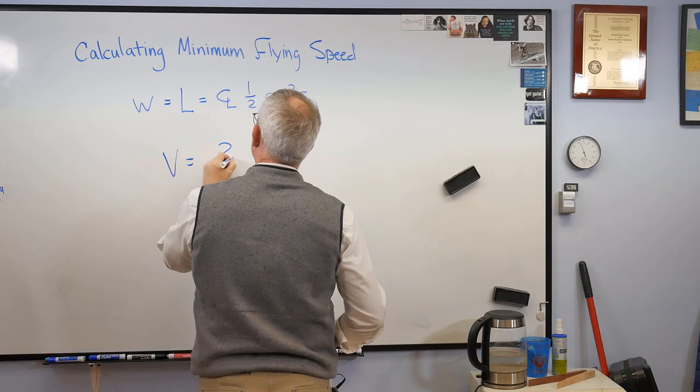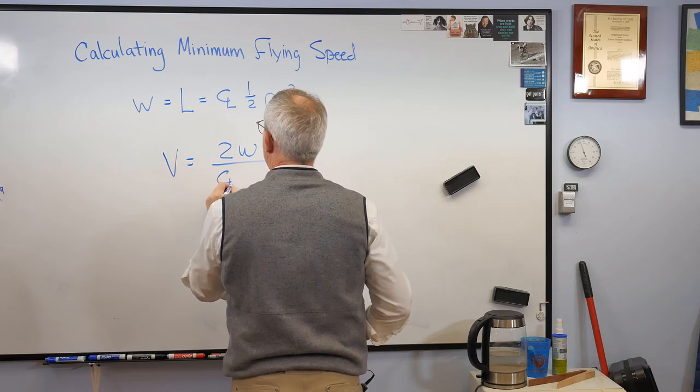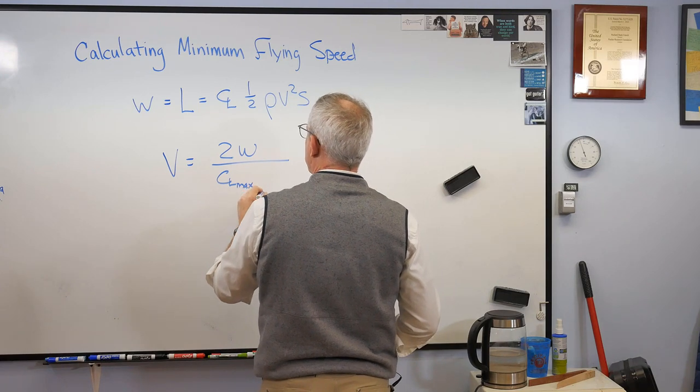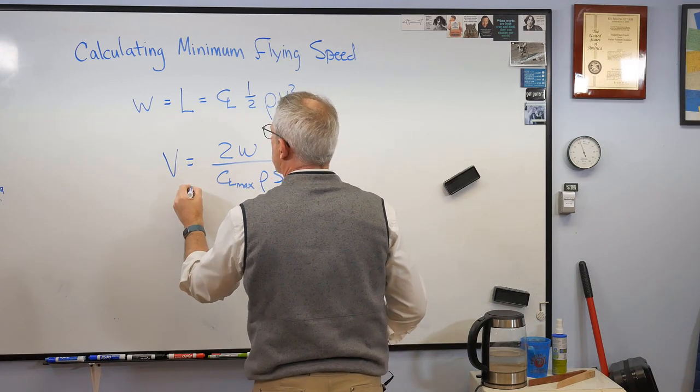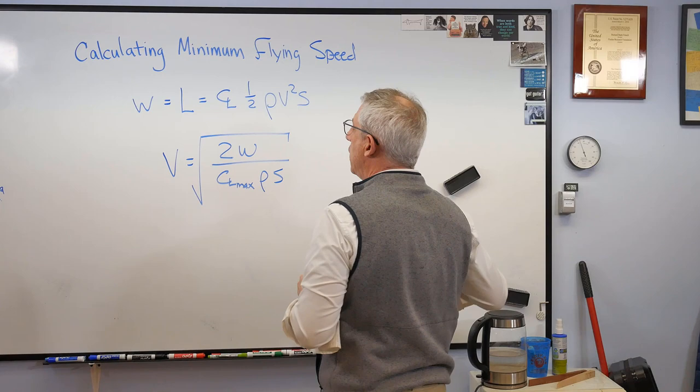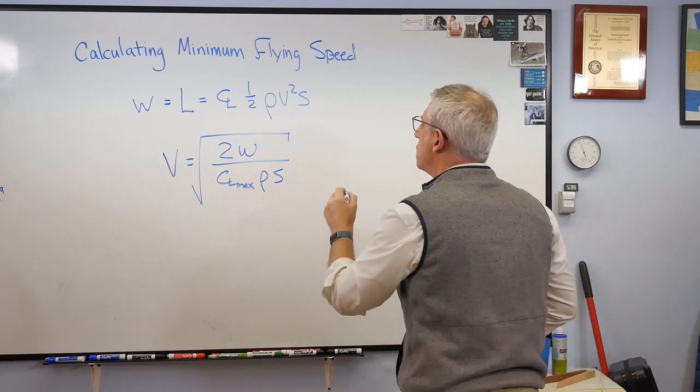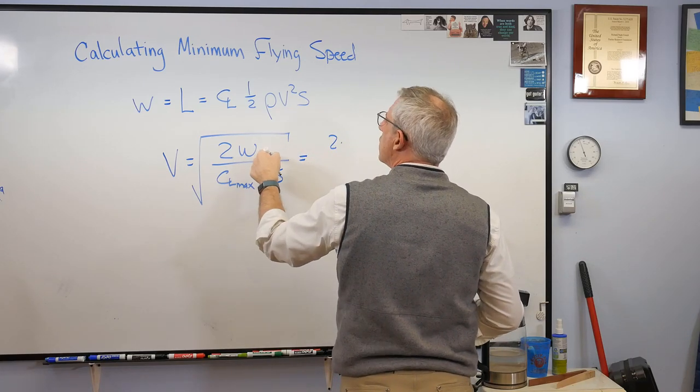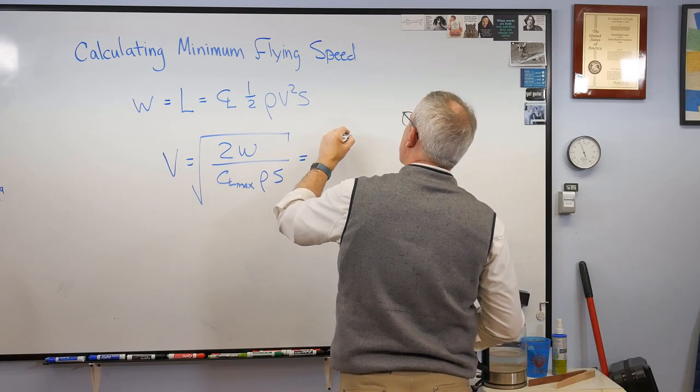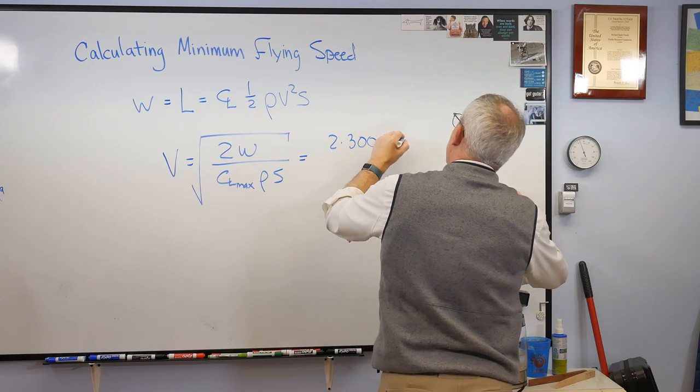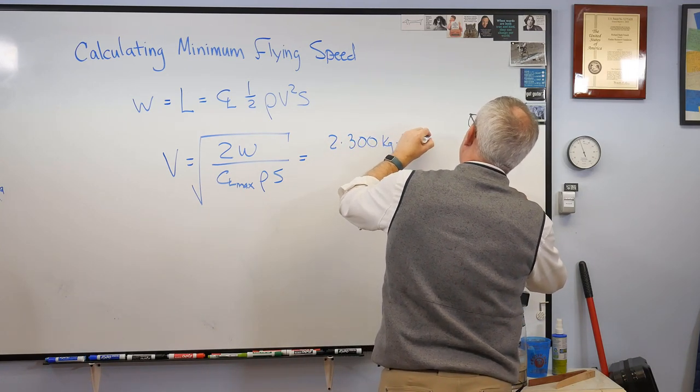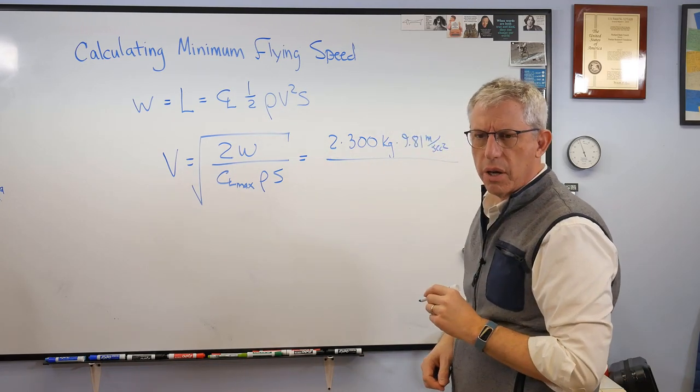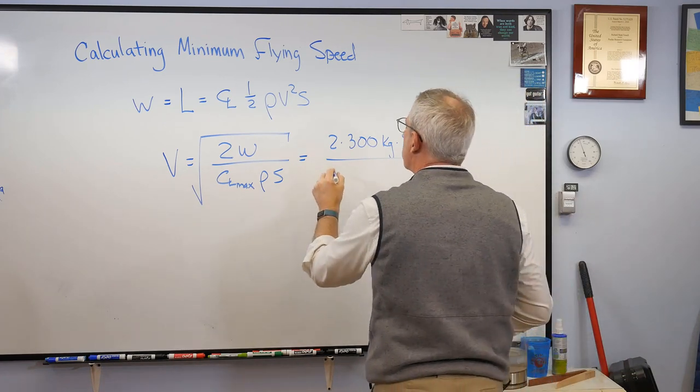So velocity is 2 times the weight over CL max times rho S, and because velocity was squared there, we need a square root. So let's just put the numbers in here. Now, we need 2 times, now the weight is the mass times the acceleration of gravity. So that's 300 kilograms times 9.81 meters per second squared. And that is 2943 newtons if you're following along at home.